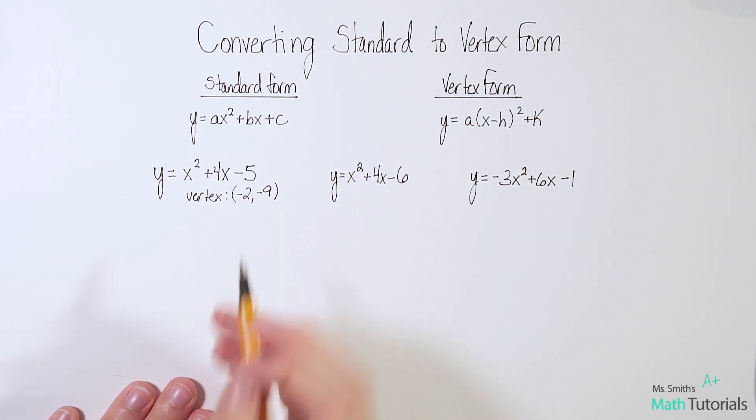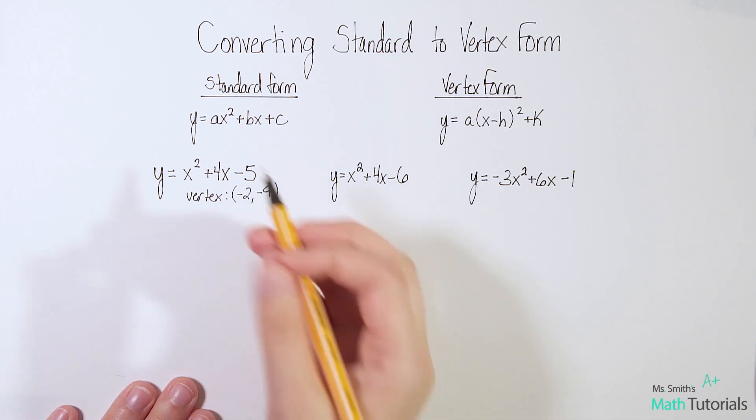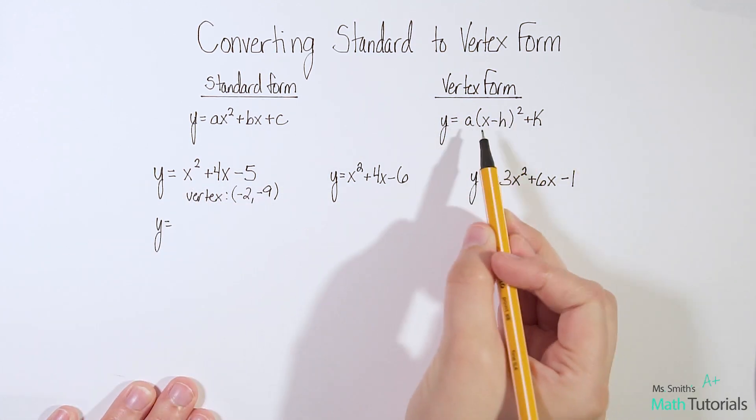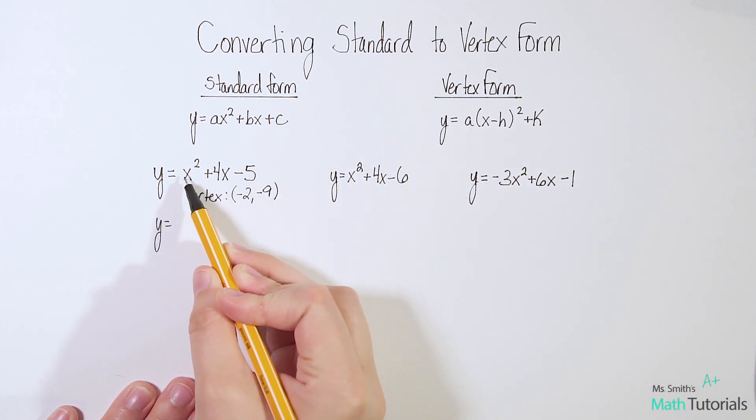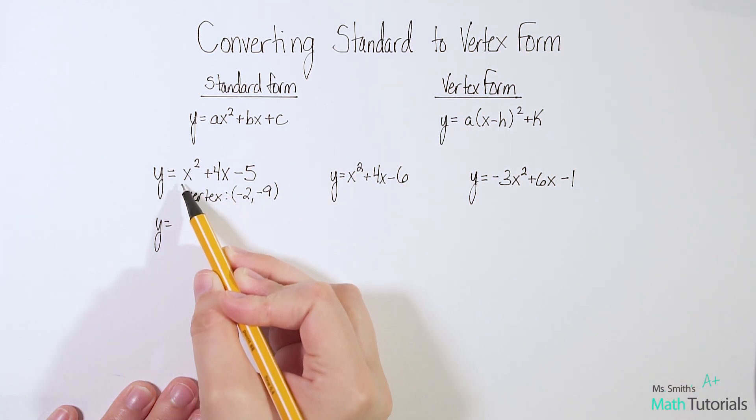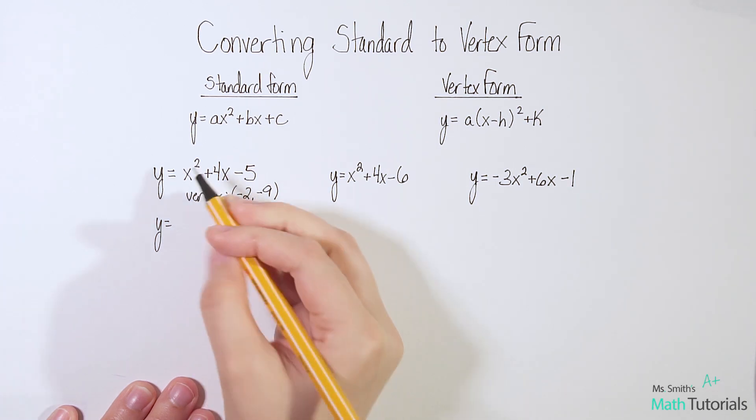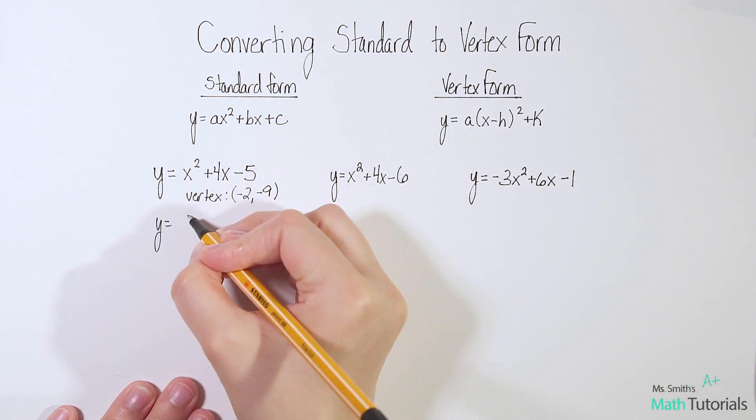Once we know that, the rest is really easy. All you have to do is y equals - remember we're creating vertex form - a is whatever the a is in the quadratic. That does not change. So in this case, it's just an understood 1 there. So it's an understood 1 right for a.